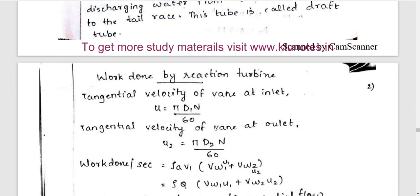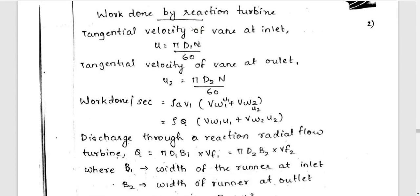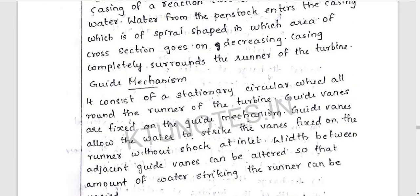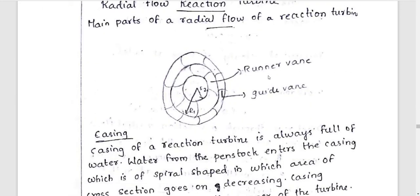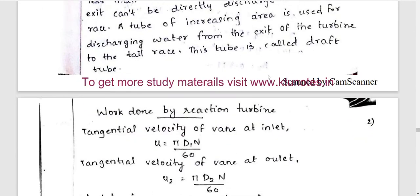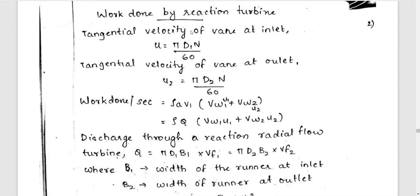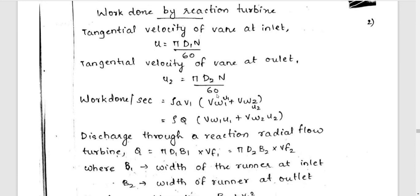Next we will have the main parts. Work done by the runners. For the Reaction Turbine, we will have the velocity equations. Tangential velocity of the vane at the inlet is U1, equal to Pi D1 N by 60. At the outlet, Pi D2 N by 60.